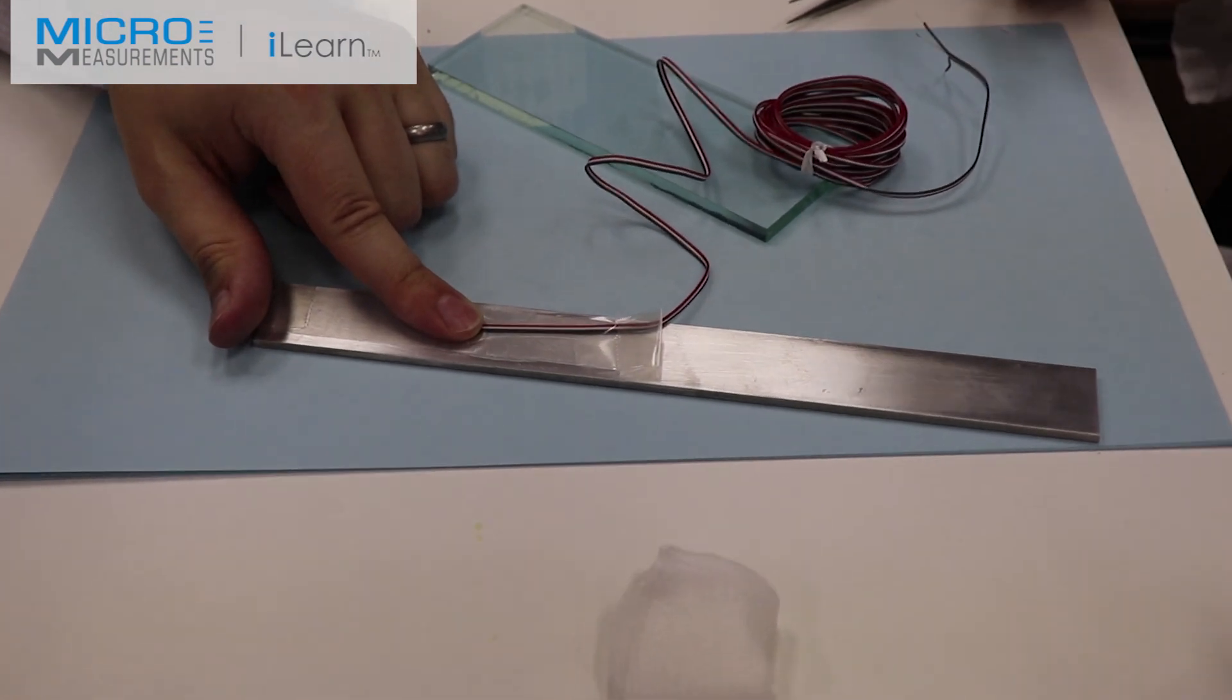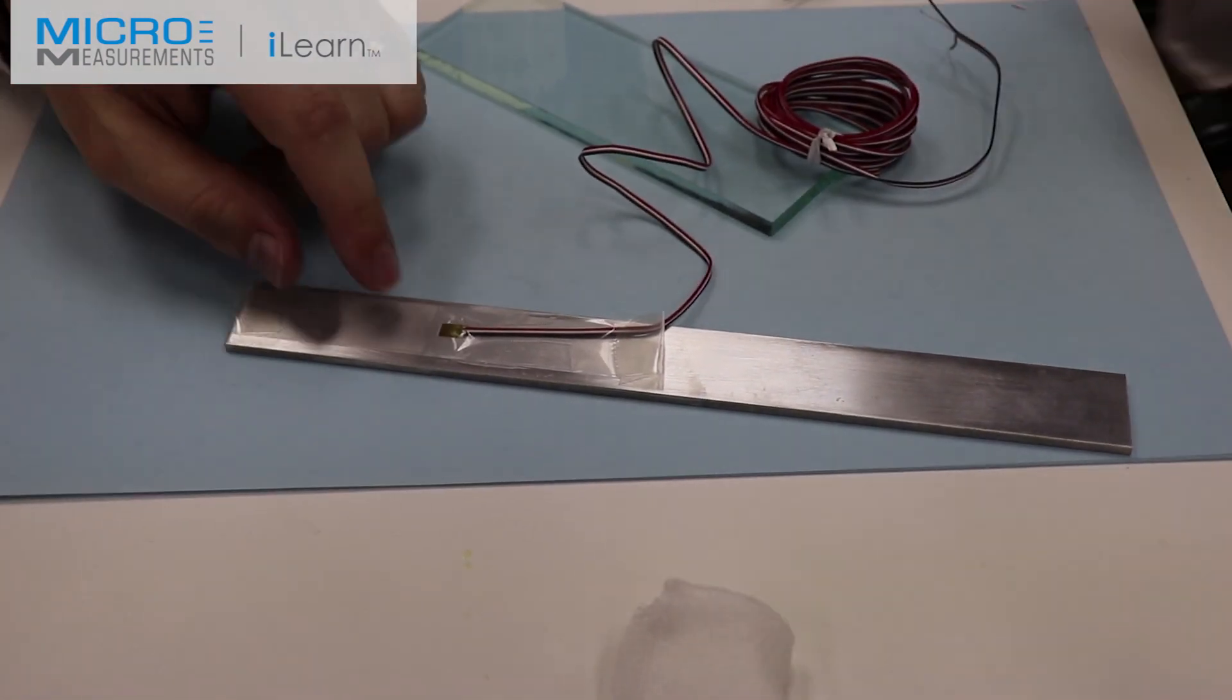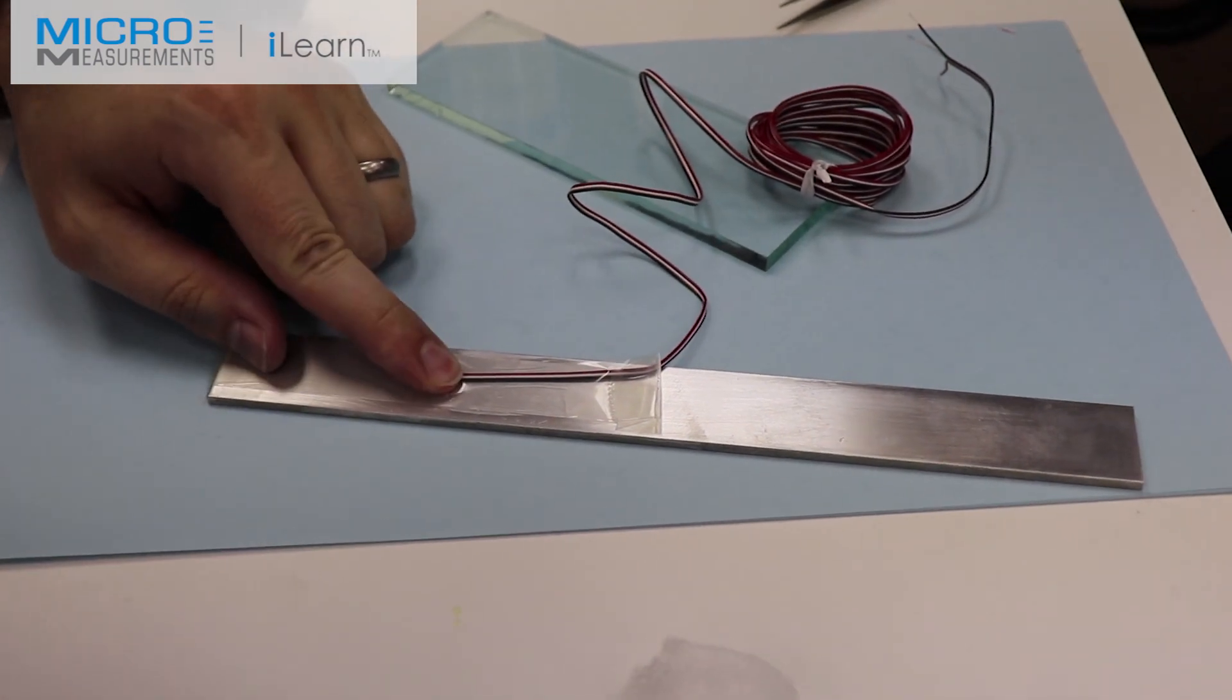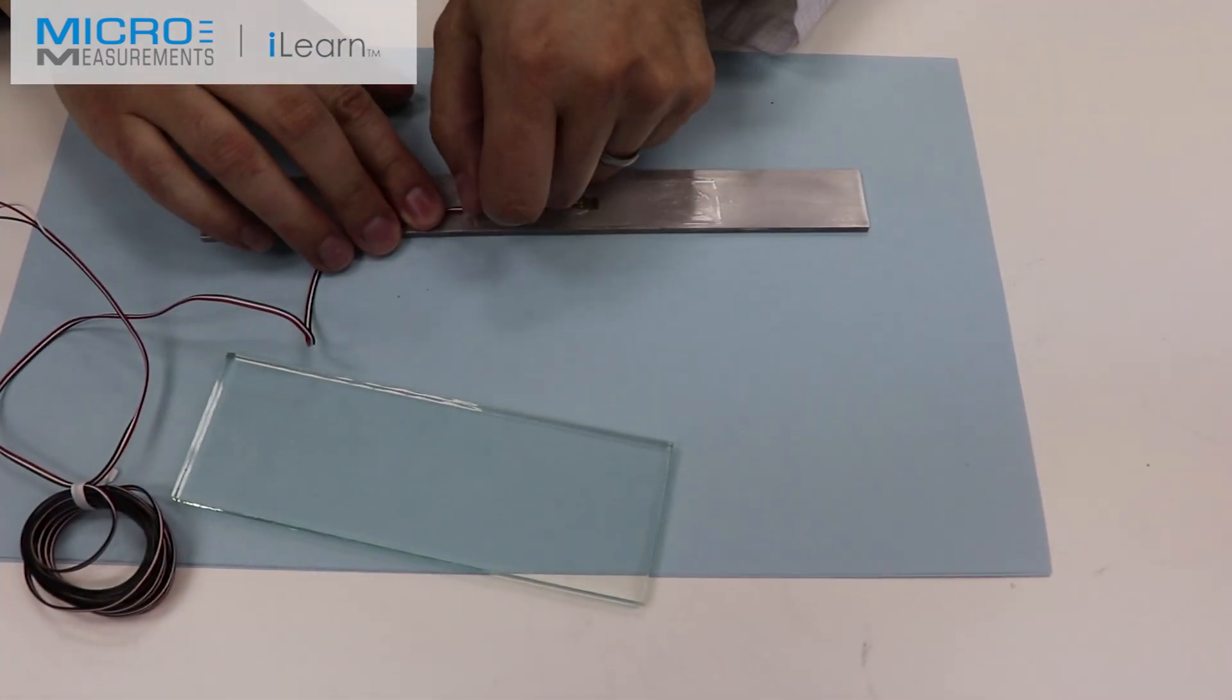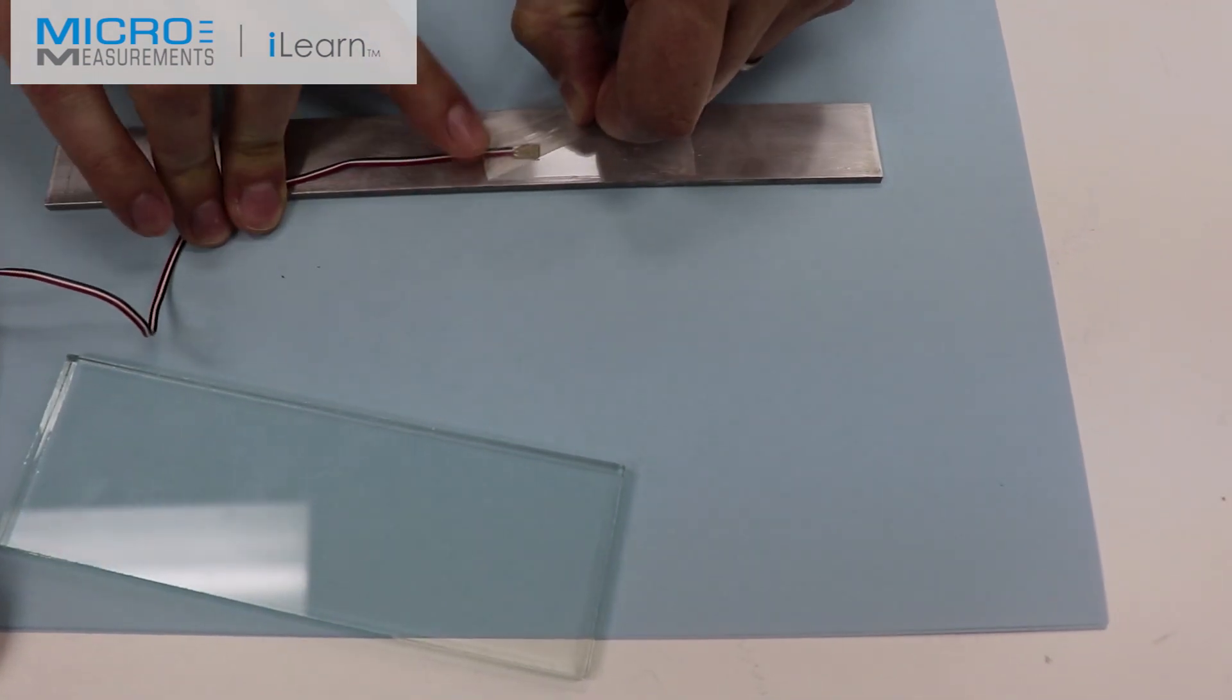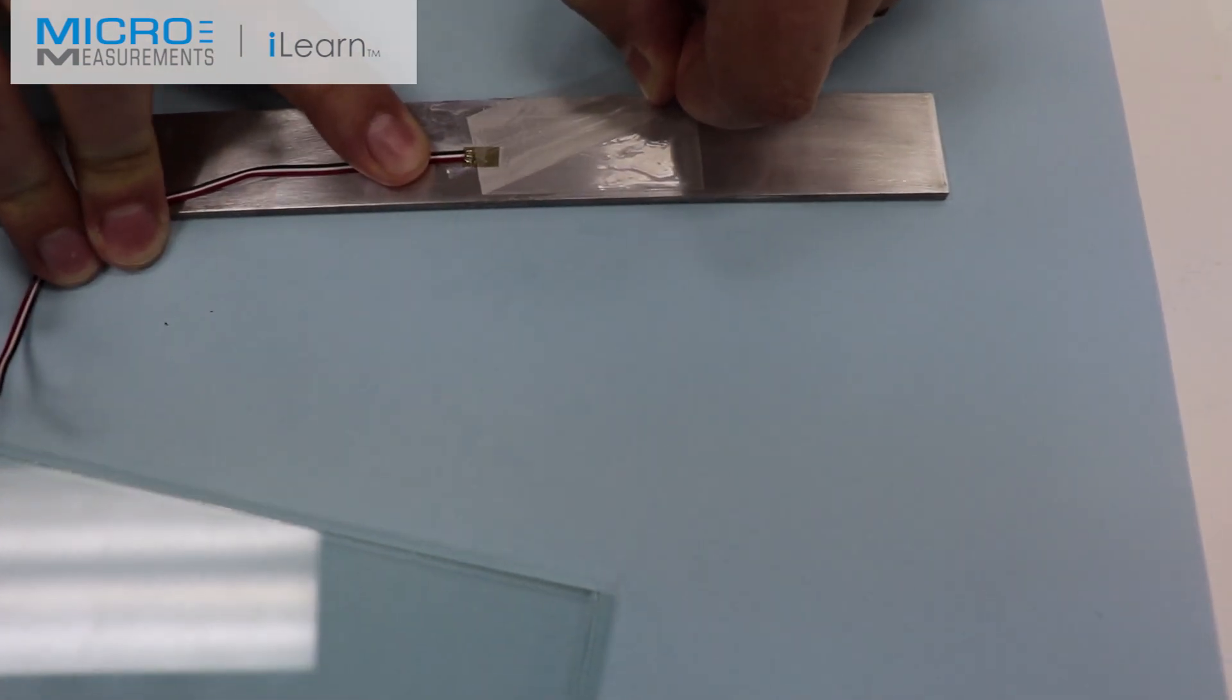Colin is at the end of his one minute of thumb pressure or finger pressure. And now we'll wait for two minutes under the tape. And we'll set up the final circuit.